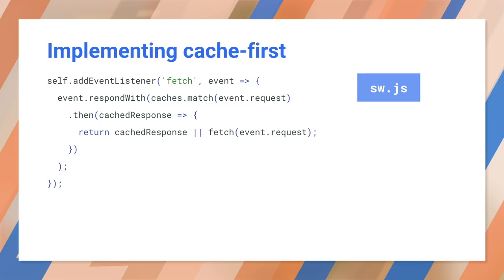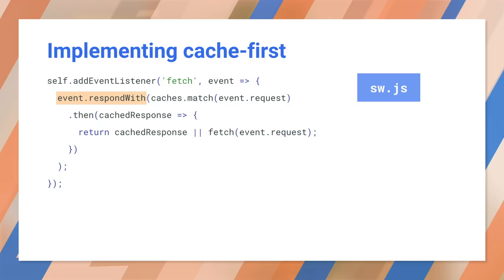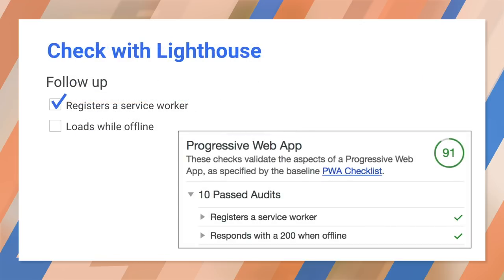So in plain English: if the cache response is not null, return it; if it is null, return the result of calling fetch. event.respondWith waits for the innermost promise to resolve and then returns its value — this will either be a match or the result of calling fetch. Now we come back and run Lighthouse again. If all goes well, offline support works now.